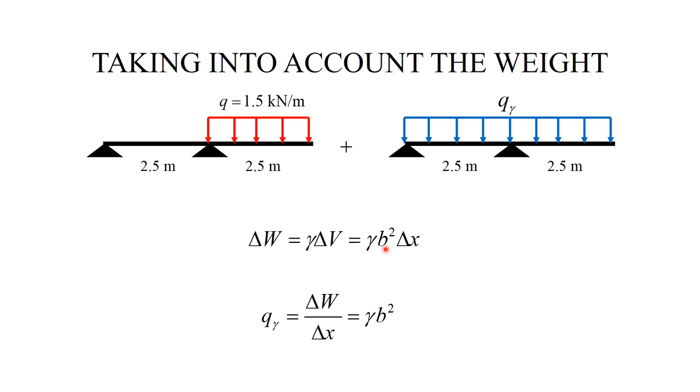As a result, we obtain that the weight per unit length, or delta w over delta x, is simply equal to gamma b squared.